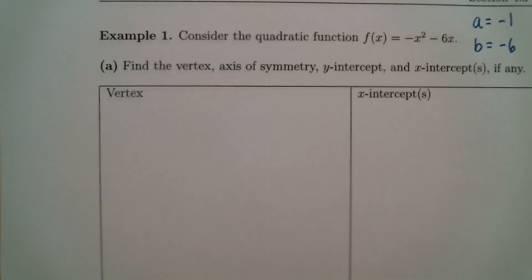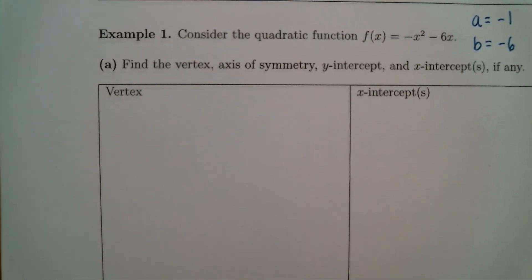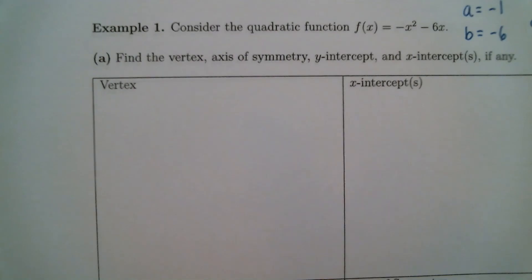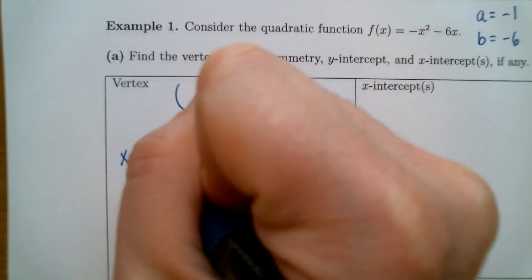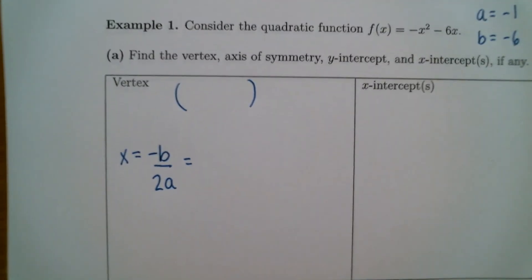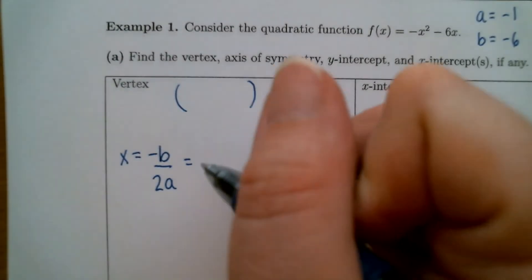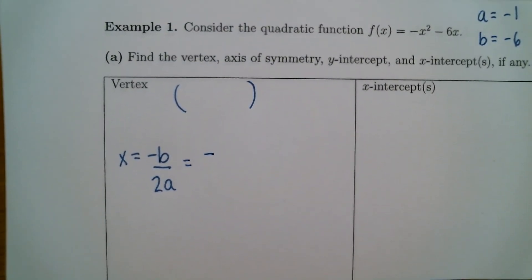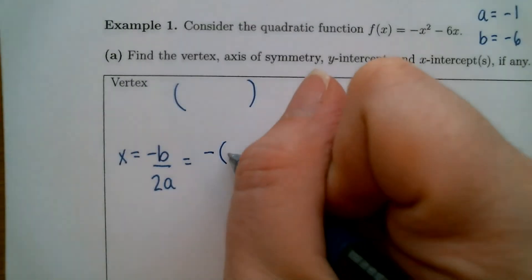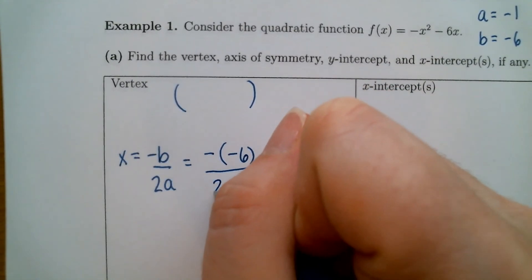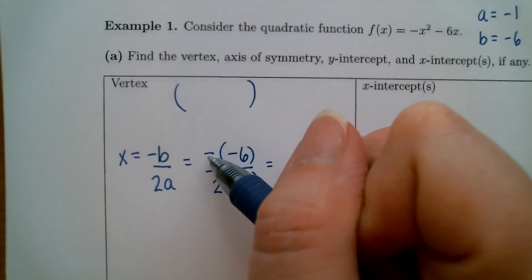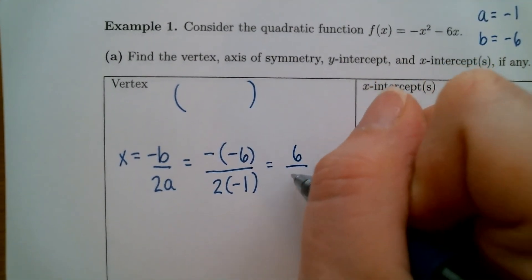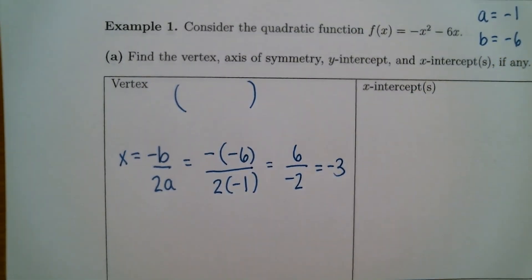Let's start by finding the vertex of this parabola. The vertex is going to be an ordered pair with an x-coordinate and a y-coordinate. To get the x-coordinate, apply the formula x equals negative b over 2a. Be careful with your signs — this negative is part of the formula. b is negative 6, and the denominator is 2 times negative 1. Negative times negative is positive, so we get 6 over negative 2, giving us an x-coordinate of negative 3.